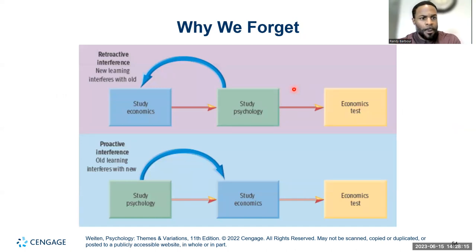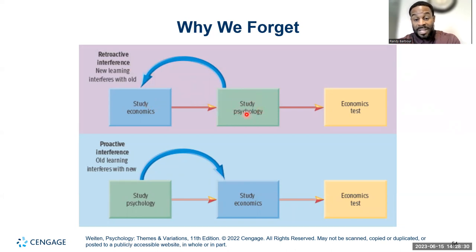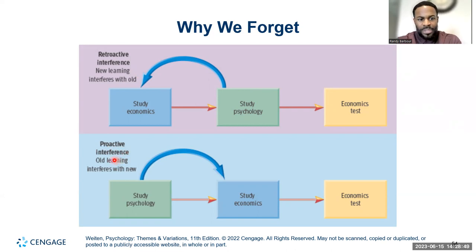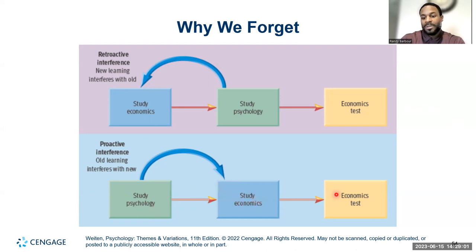Here are visual representations of interference. In retroactive interference: you study economics, then study psychology; the new psychology learning interferes with your economics test recall — so you might need to study economics closer to the test. In proactive interference: having already studied psychology interferes with studying economics afterward. You may need to study economics first, then not study psychology again right before that test.